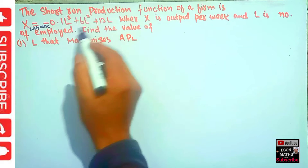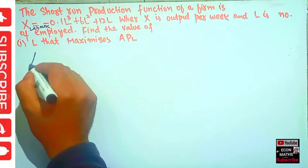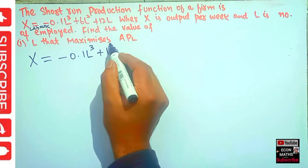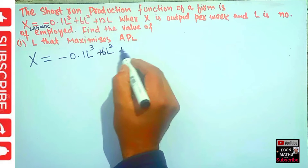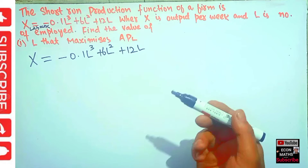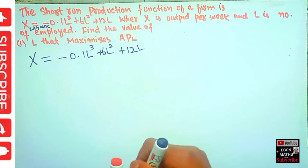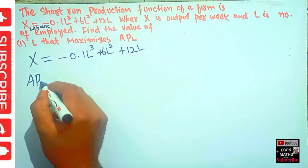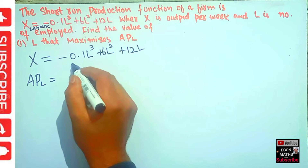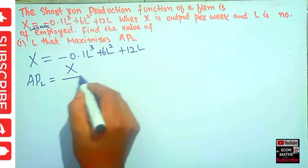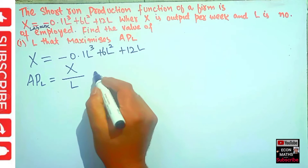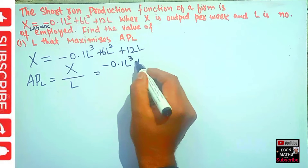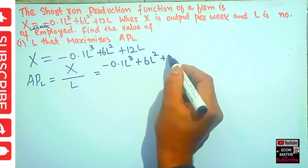So our production function is X equals minus 0.1 L cubed plus 6 L squared plus 2L. This is the short-run production function for a firm. First, we need to find the APL — that is, the average product of labor. The average product of labor is simply the total output X divided by L.